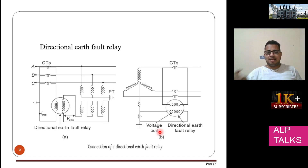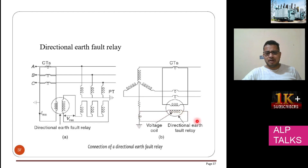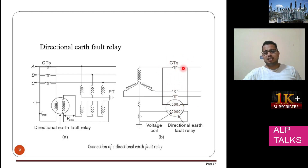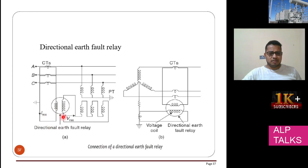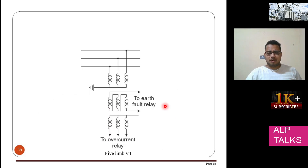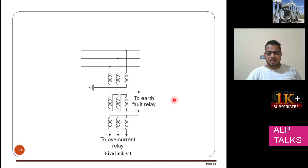Directional earth fault relay: sometimes direction also matters in earth fault relay. Whatever current flows through the neutral coil is given to the directional earth fault relay. The combination of all currents is monitored. Residual current I_residual and residual voltage V_residual are used. A potential transformer is also used in this case. The current connection is given to the overcurrent relay and the earth fault relay.